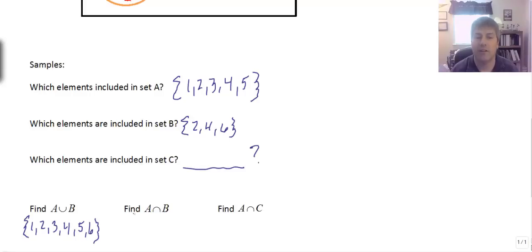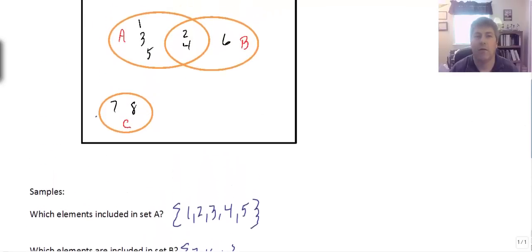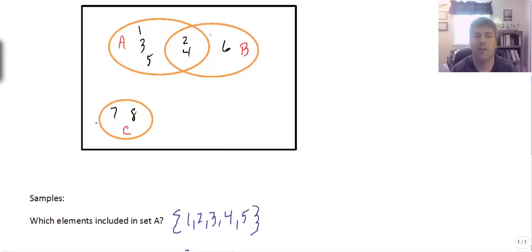Find the intersection of A and B. So A intersect B. A intersect B is the overlap. So if we look at that visually, going back to our diagram, that's pretty easy to see.